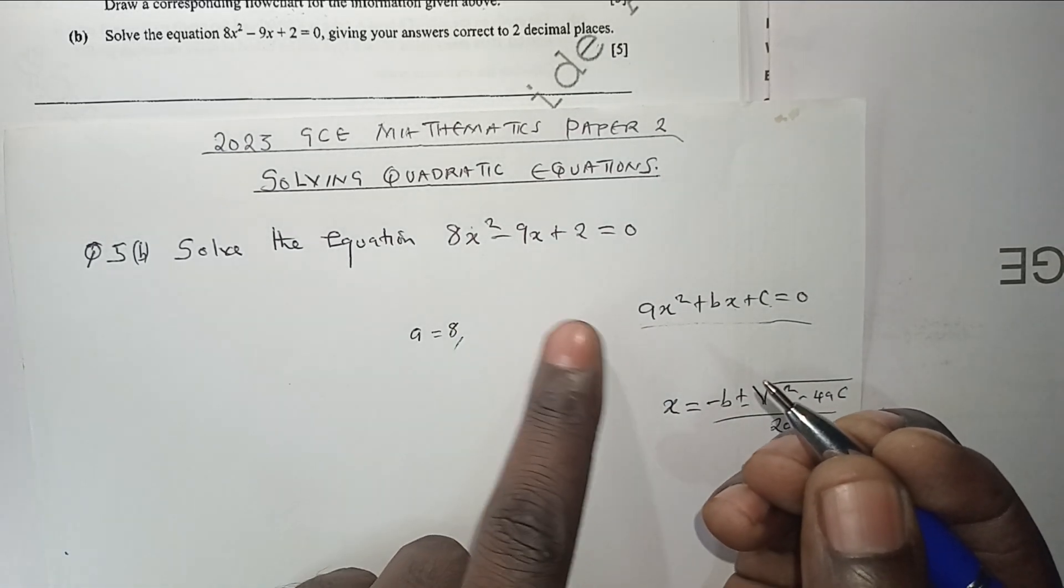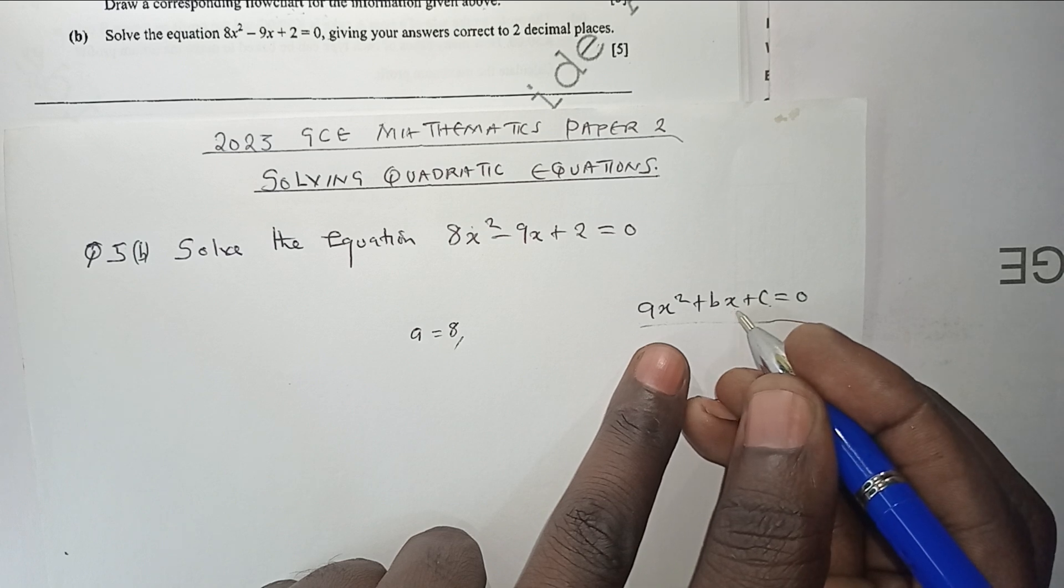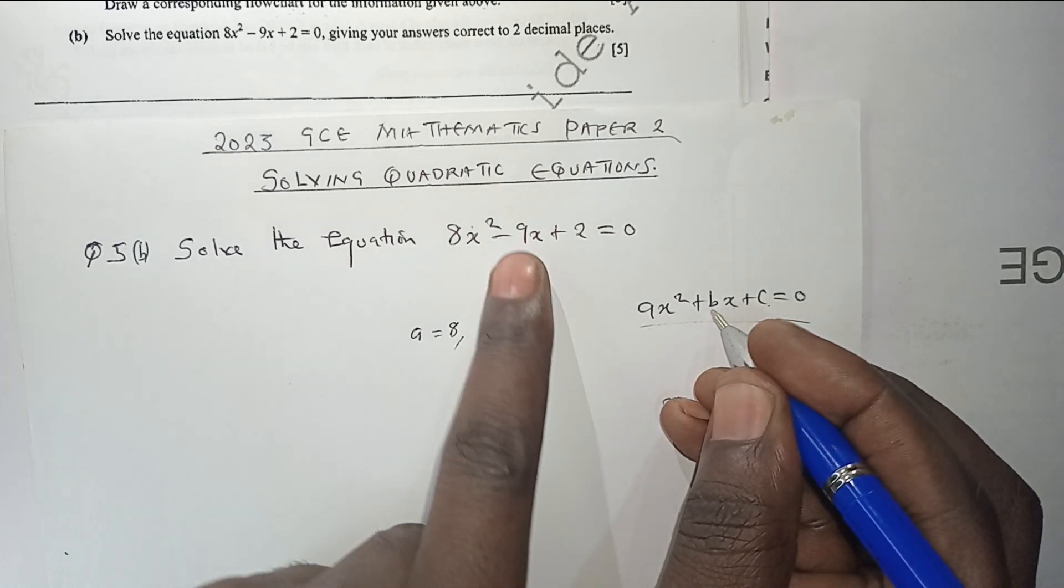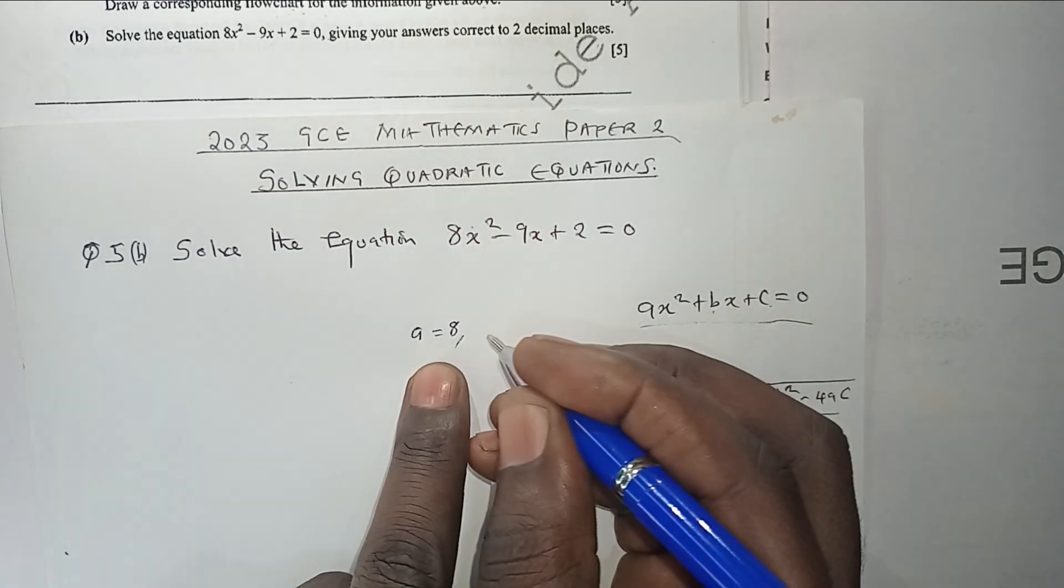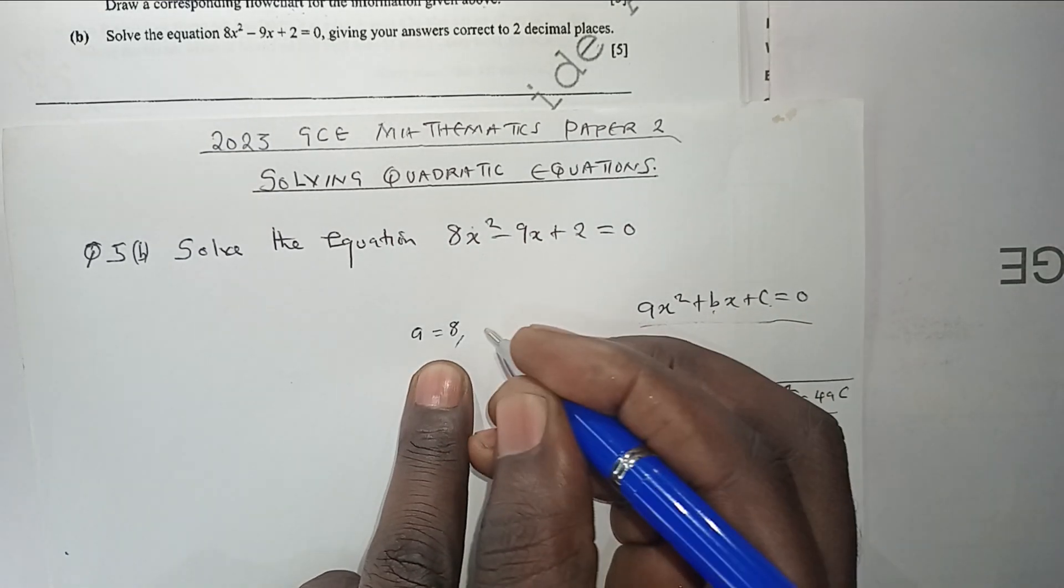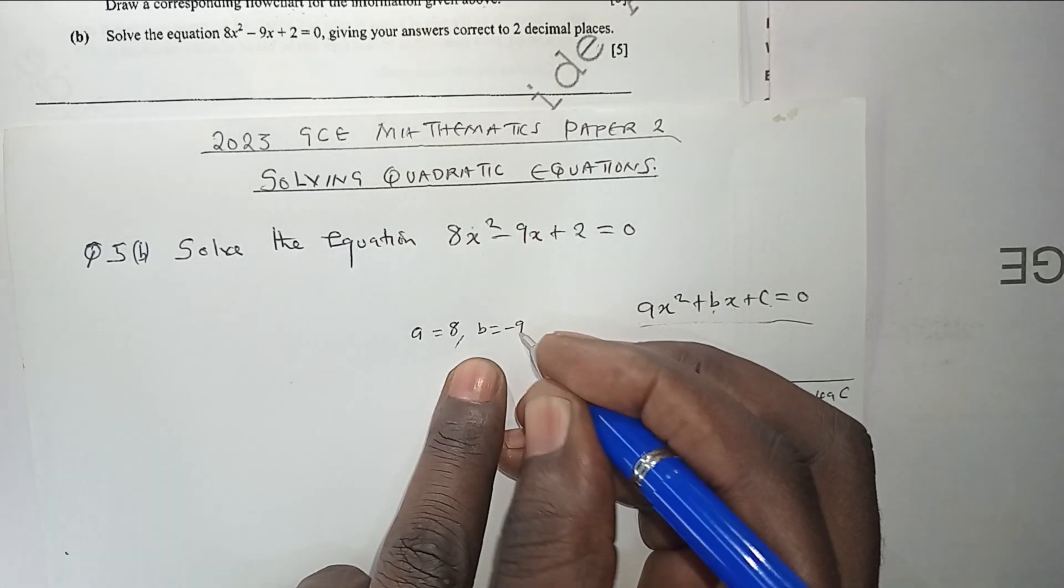By comparison again, we can see that the coefficient of x here is b. The coefficient of x here is negative 9. So again, we are going to say b is equal to negative 9.